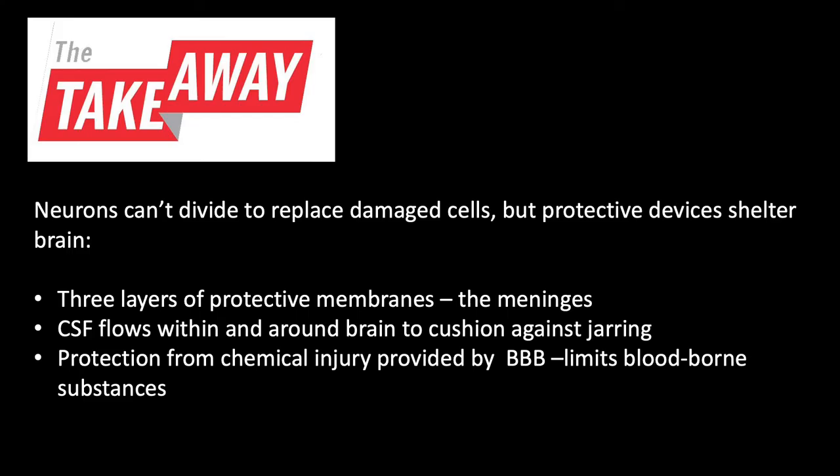So the takeaway for today: we know that neurons can't divide to replace damaged cells, but protective devices are in place to shelter the brain. There are three layers of protective membranes — the three meninges. There's CSF that flows within and around the brain to cushion against jarring. And finally, protection from chemical injury is provided by the blood-brain barrier, which limits the brain from blood-borne substances. The cauda equina — which looks very similar to a horse tail — is one of the coolest things in the human body.